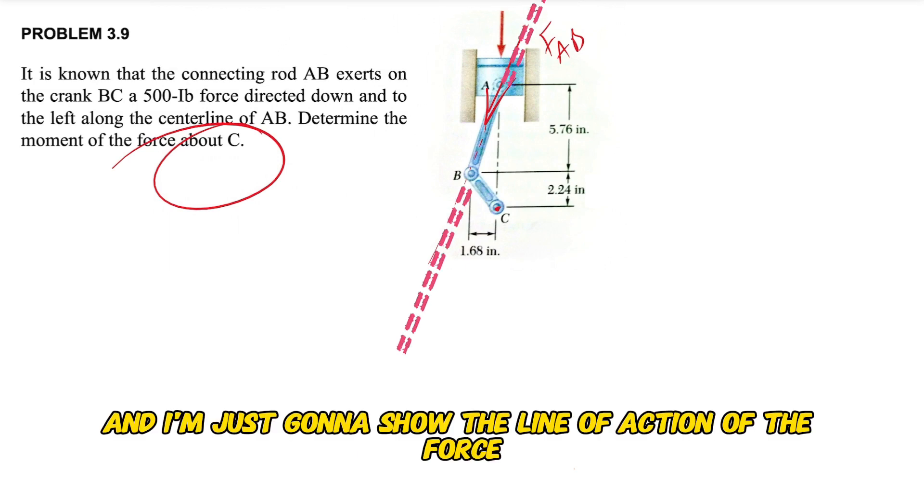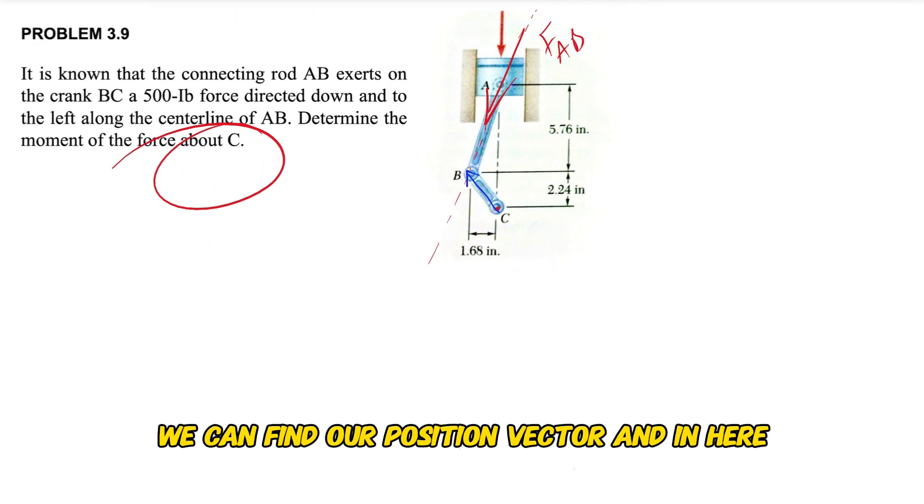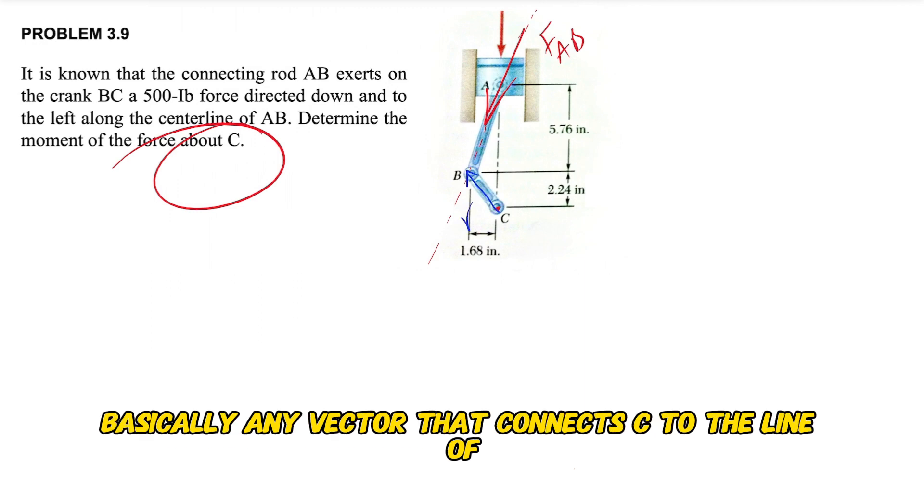So basically for finding the moment of this force about point C, we can find our position vector. In here, basically any vector that connects C to the line of action of the force FAB can be our position vector.